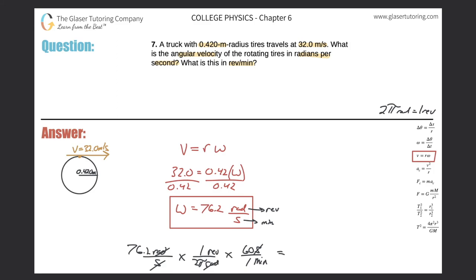So now simply just take out the calculator and do 76.2 times 60 divided by 2 pi. Make sure you put the 2 pi in parentheses and we get a value of 728—when we consider significant figures, 728 revolutions per minute. And that would be the final answer.